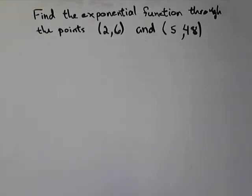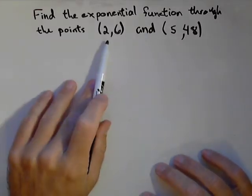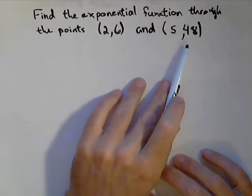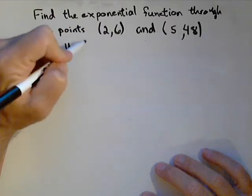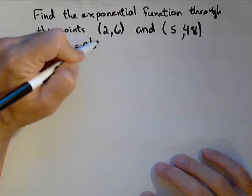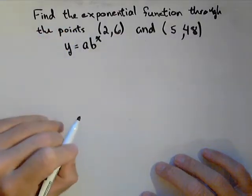In this video, we're gonna talk about how we can find an exponential function going through two points. We're gonna use the points (2,6) and (5,48). And we're gonna build an exponential model that is y equals ab to the x.